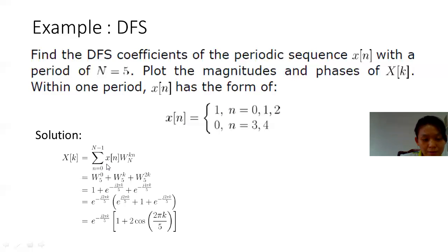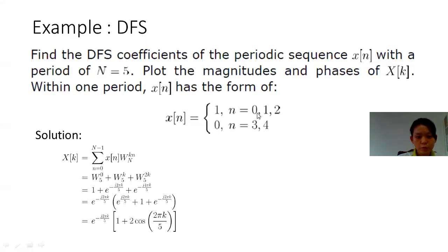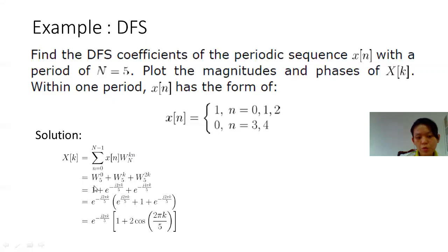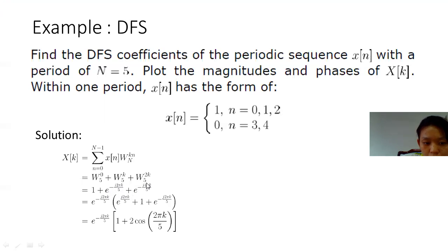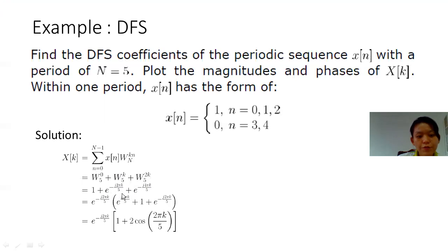We plug our xn into the formula. We use W with N=5. For the first term, n=0, the exponential is 0 so we get 1. Since n=3 and n=4 have xn=0, we don't need to consider them because 0 multiplied by anything is 0. So we have: exponential of minus 2j·pi·(0)·k/5, plus exponential of minus j·(2·2)·pi·k/5, which gives exponential of minus j·4·pi·k/5. We then factor out exponential of minus 2j·pi·k/5.